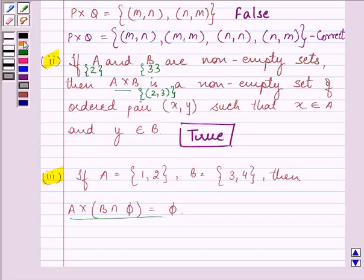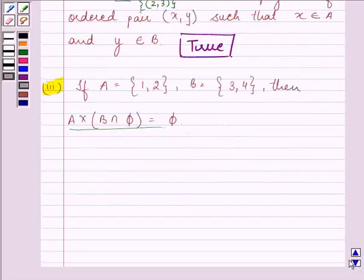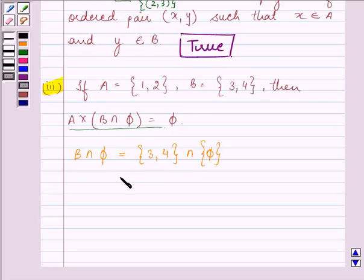And then we will be able to tell whether this is a true or false statement. Now for A cross, first of all, we need to find out B intersection phi. It will be the elements {3, 4} intersection phi. And the answer will be phi.